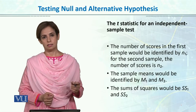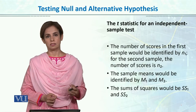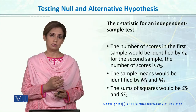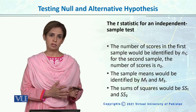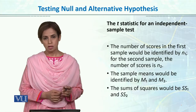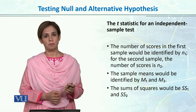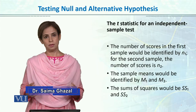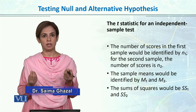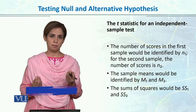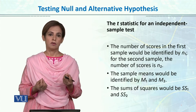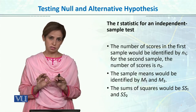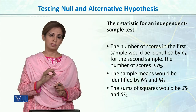Before we run a t-test or any statistical test to test our hypothesis, we need to clearly state a null hypothesis and an alternative hypothesis. For an independent sample t-test, we draw samples from two different populations. We always start with the assumption that both populations are equal and there is no difference between them.